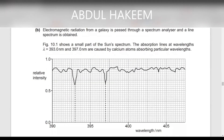Electromagnetic radiation from a galaxy is passed through a spectrum analyzer and a line spectrum is obtained. The figure shows a small part of the sun's spectrum — the absorption lines at wavelengths of 393 nm and 397 nm are caused by the calcium atom absorbing particular wavelengths.